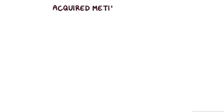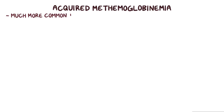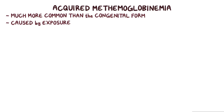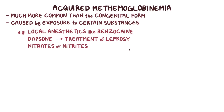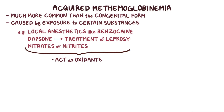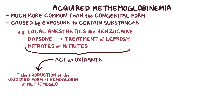Acquired methemoglobinemia is much more common than the congenital form, and is caused by exposure to certain substances. For example, local anesthetics like benzocaine, dapsone, which is used for the treatment of leprosy, and nitrates or nitrites. These substances act as oxidants and therefore increase the production of the oxidized form of hemoglobin, or methemoglobin.